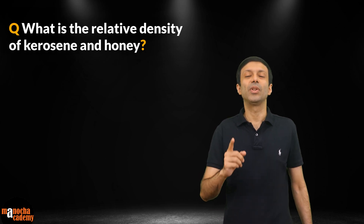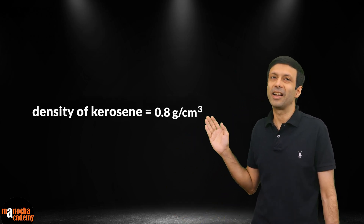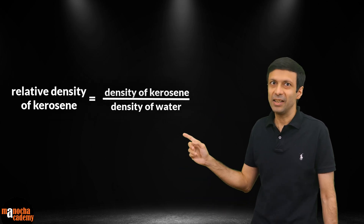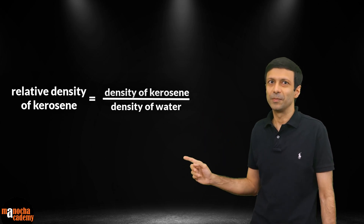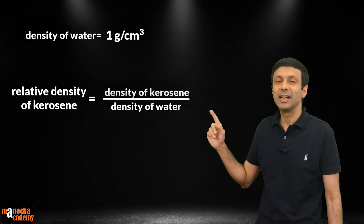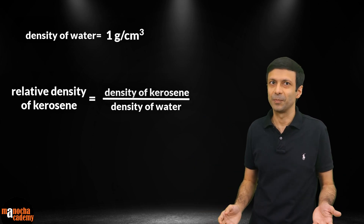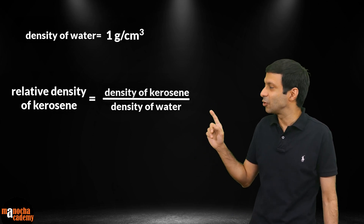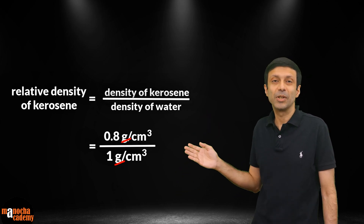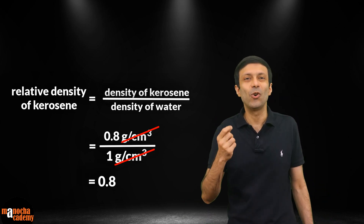Now what do you think will be the relative density of kerosene and honey? Let's start with the relative density of kerosene. The density of kerosene was about 0.8 gram per centimeter cube. Using our relative density formula, it's going to be density of kerosene divided by the density of water. The density of water we substitute as 1 gram per centimeter cube since we are using CGS units. So relative density of kerosene equals 0.8 g/cm³ divided by 1 g/cm³ — the units cancel — so the relative density of kerosene is simply 0.8.